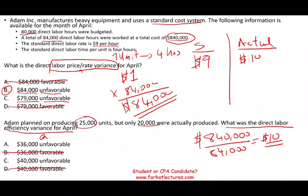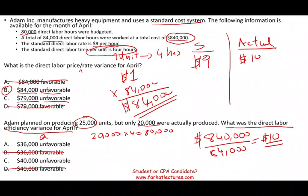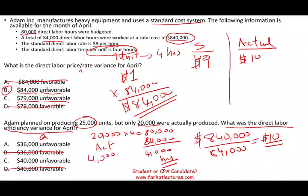Adam planned on producing 25,000 units but produced only 20,000. If they produced 20,000 units at four hours each, the standard hours should be 80,000. The information is given twice — the standard is four hours per unit, and 80,000 direct labor hours were budgeted. The actual was 84,000 hours, so they spent an additional 4,000 hours. You multiply those 4,000 extra hours by the standard rate of $9, giving an efficiency variance of $36,000 unfavorable.